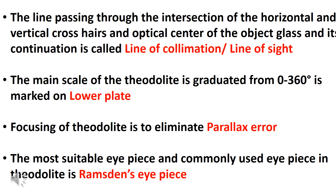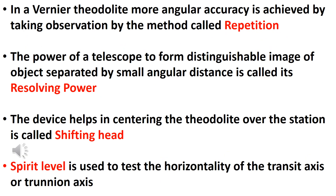More angular accuracy is achieved by taking observations by the method called repetition. The resolving power is the power of a telescope to form a distinguishable image of objects separated by a small angular distance.